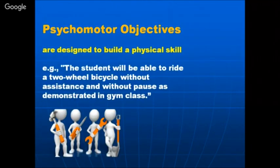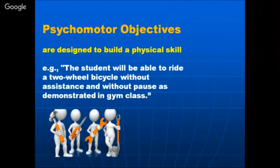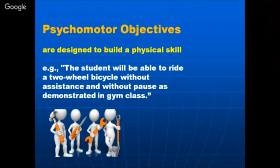The third classification is psychomotor objectives, designed to build a physical skill — how well and how much the student is able to do something physically. For example: 'the student will be able to ride a two-wheel bicycle without assistance and without a pass, as demonstrated in a gym class.' He must physically demonstrate this — not just apply his mind or attitudes, though knowledge and attitudes accompany it of course.